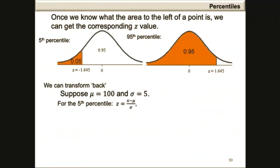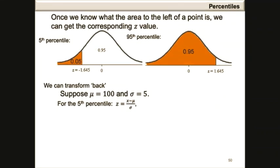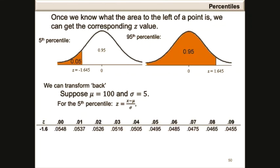For the 5th percentile, let z be defined as z equals x minus mu divided by sigma. To find the z-value, we need to look for the probability to the left of that z-value. Because we are working with the 5th percentile, our probability is 0.05. Within the table, we are going to look for the probability of 0.05, and not on the borders of the z-column or the z-row.